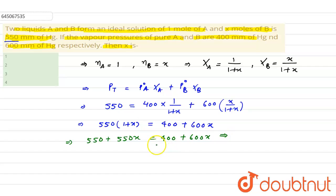From here, we can take this 400 to this side and this 550 x to this side. So here we will get 550 minus 400 is equal to 600 x minus 550 x.